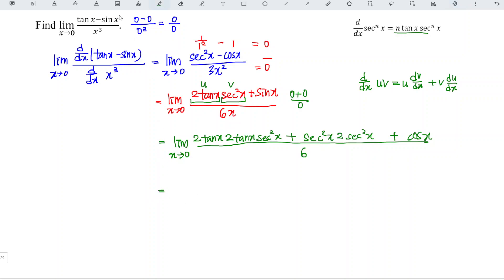Now we should substitute 0. When we substitute 0 into tangent, this will definitely be 0. Secant when we substitute 0 is 1, which means we have 1 times 2 times 1, which equals 2.